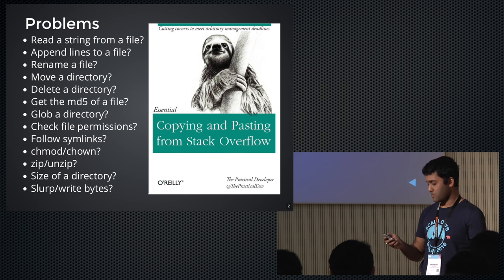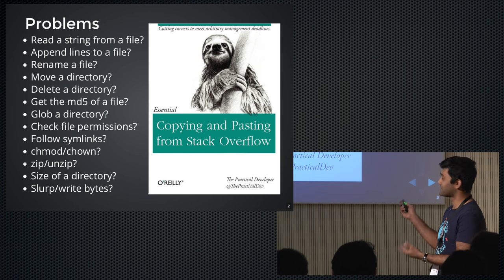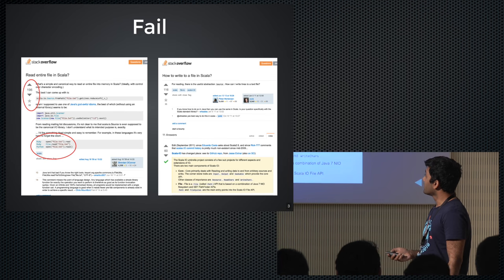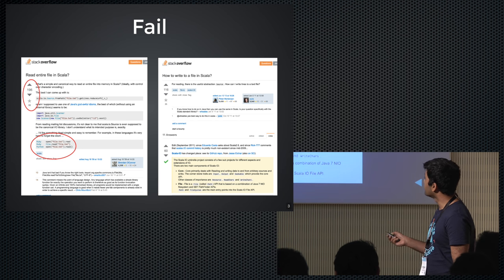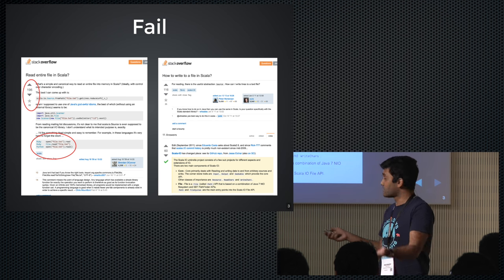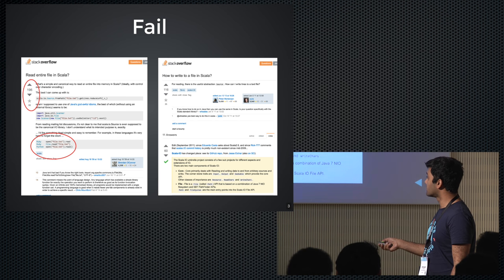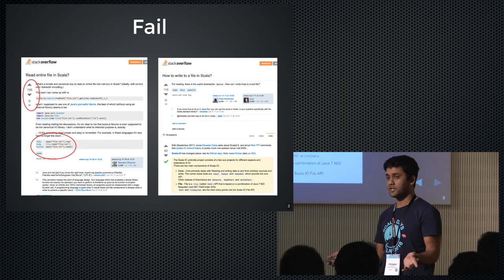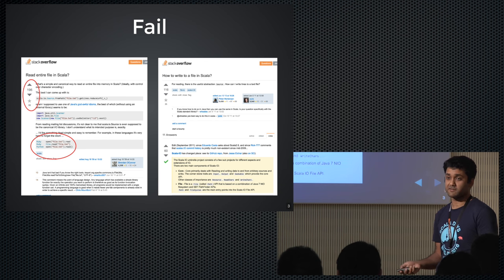So what do most people do? They go and Google, find things, copy-paste from Stack Overflow. For example, 'how to read a file in Scala' — I took the screenshot a long time back — has over 200 people who favorited it. And 'how to write a file in Scala' — the funny thing is the top accepted answers don't really work. One suggests a library whose last commit was seven years ago, and the other accepted answer is actually buggy: it leaves a file handler open and never says how to close it. So even copying and pasting from Stack Overflow might bite you.